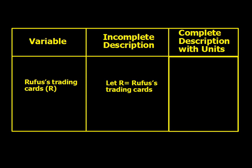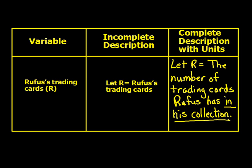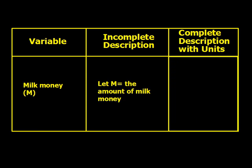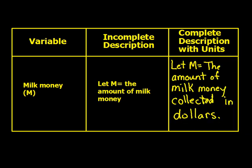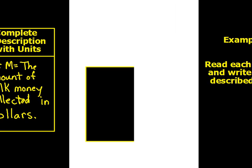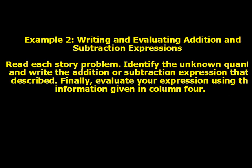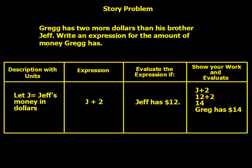For Rufus's trading cards: let R equal the number of trading cards in Rufus's collection. And for the next one: let M equal the amount of milk money collected in dollars. We're going to move on to our story problems for example 2. It says: read each story problem, identify the unknown quantity, and write the addition or subtraction expression that it describes. Finally, evaluate your expression using the information given in column four. The first couple have been done for you.